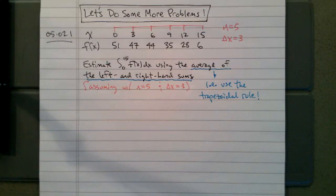So we are presented with this table of values for the function f of x and asked to approximate the integral from 0 to 15 of f of x dx using the average of the left and right hand sum. It wasn't explicitly stated, so I'm just going to assume that they wanted to use n equals 5, that is a delta x of 3.